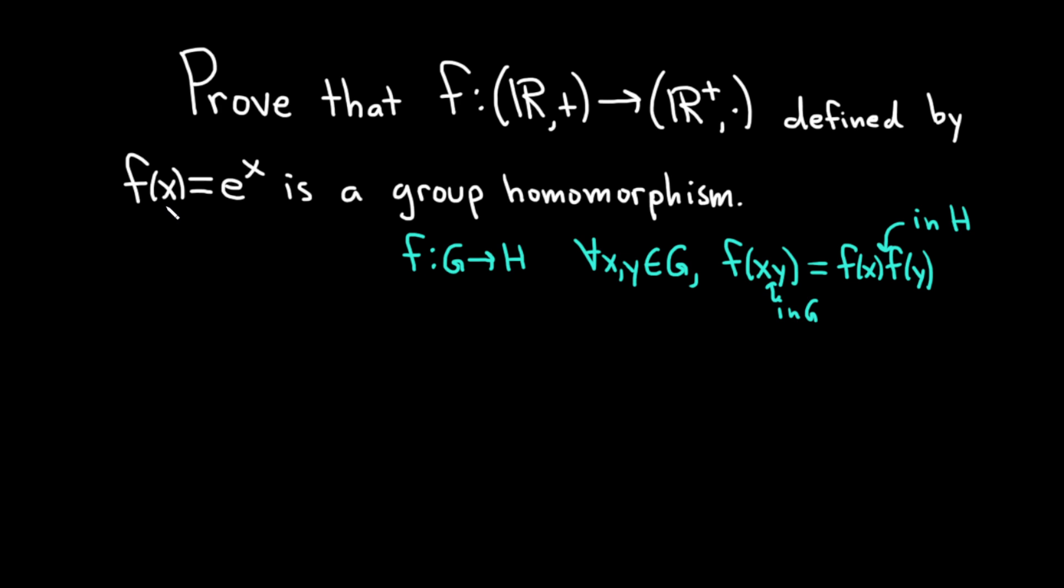And so in this particular example, we're going to prove that f of x equals e to the x is a group homomorphism. So what's all this? This is just the notation for the function. So the domain is the set of reals, that's R, and the plus indicates that this is a group under addition.